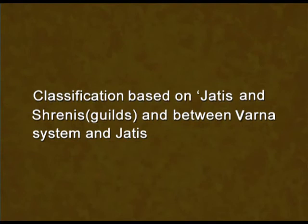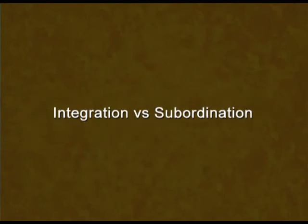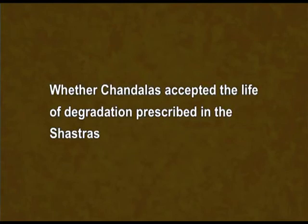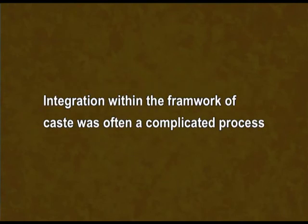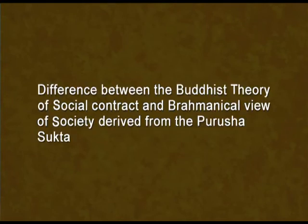In this lecture, we discussed: the meaning of social differences; classification based on jatis and shrenis or guilds, and the difference between the Varna system and jatis; integration versus subordination, and whether Chandalas accepted the life of degradation prescribed in the shastras; integration within the framework of caste as a complicated process; and the difference between the Buddhist theory of social contract and the Brahmanical view of society derived from the Purush Sukta.